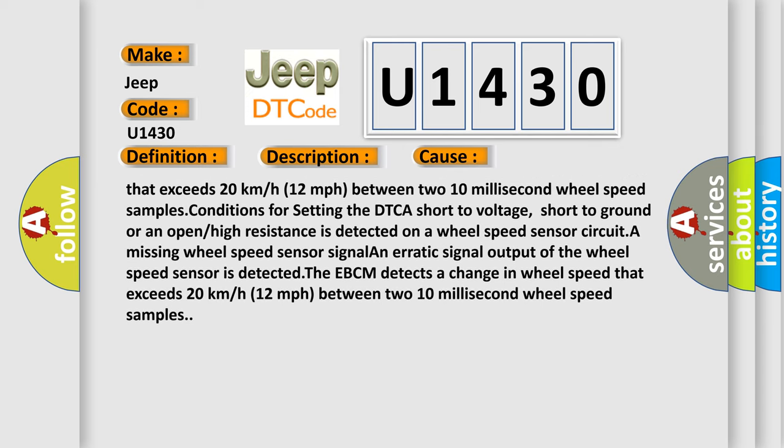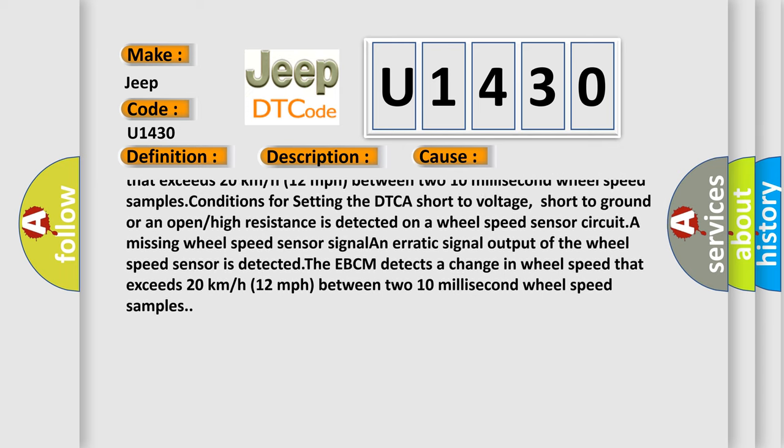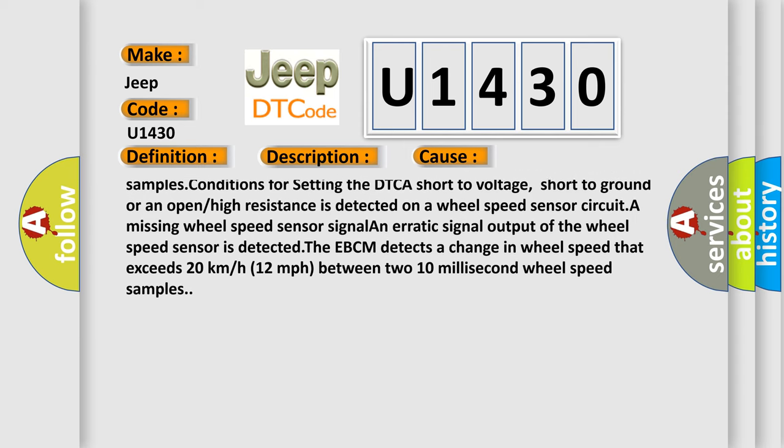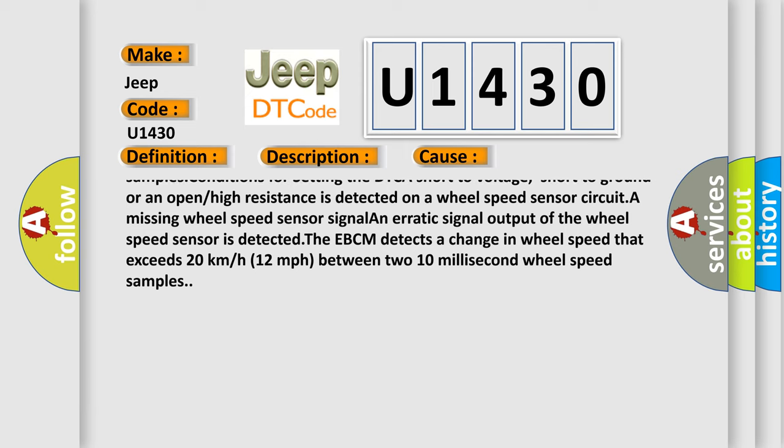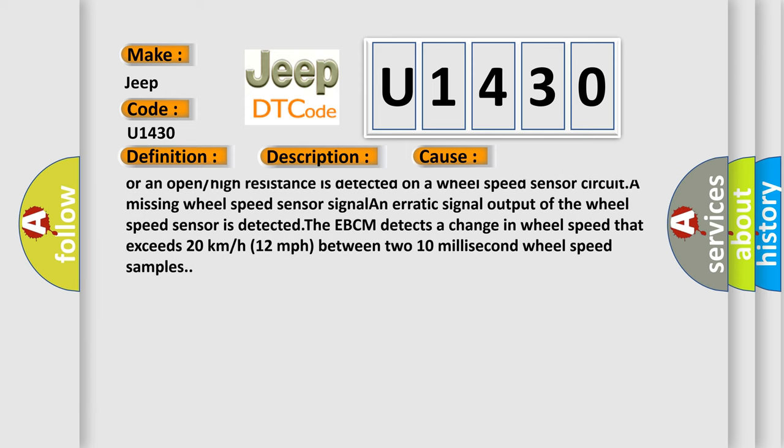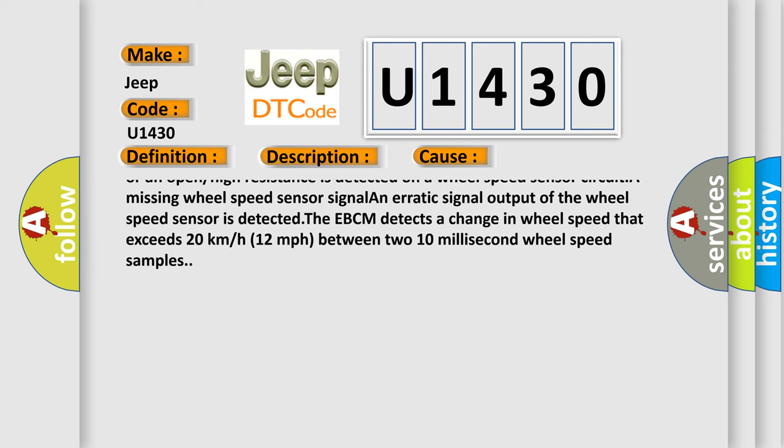The EBCM detects a change in wheel speed that exceeds 20 kilometers or 12 miles per hour between two 10 millisecond wheel speed samples.